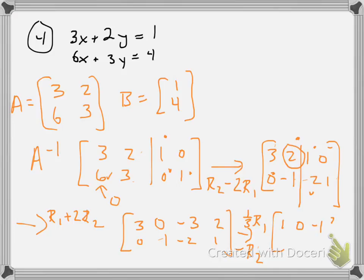So, I have 1, 0, negative 1, 2 thirds. And, I have 0, 1, 2, negative 1. Okay, this is my inverse matrix. What we found right there.